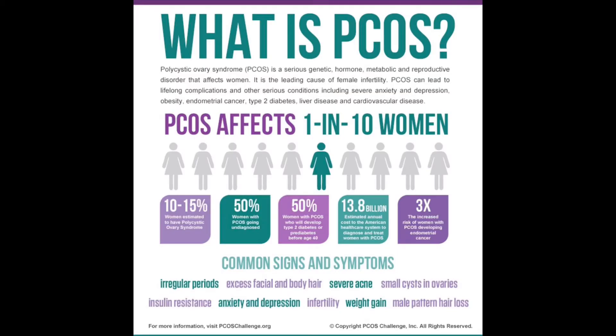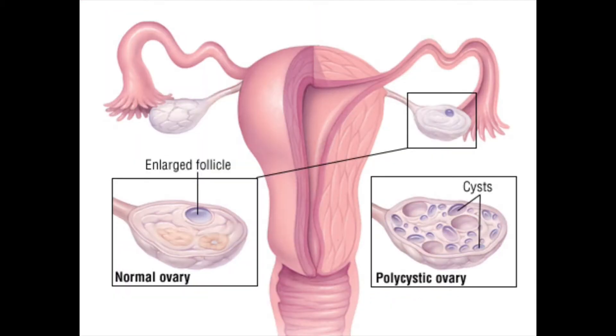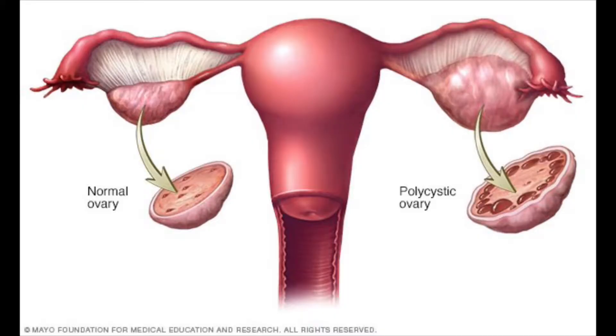Polycystic ovarian syndrome is a condition where the ovaries form multiple small cysts, and inside of these cysts are immature eggs. Every month when we normally ovulate, one of these cysts would become what's called a dominant follicle — the dominant follicle is the cyst that's going to actually rupture and release the egg. In polycystic ovarian syndrome, there is a failure to form this dominant follicle, so we end up with all of these tiny cysts that are making estrogen, which causes the lining of the uterus to keep growing and growing.